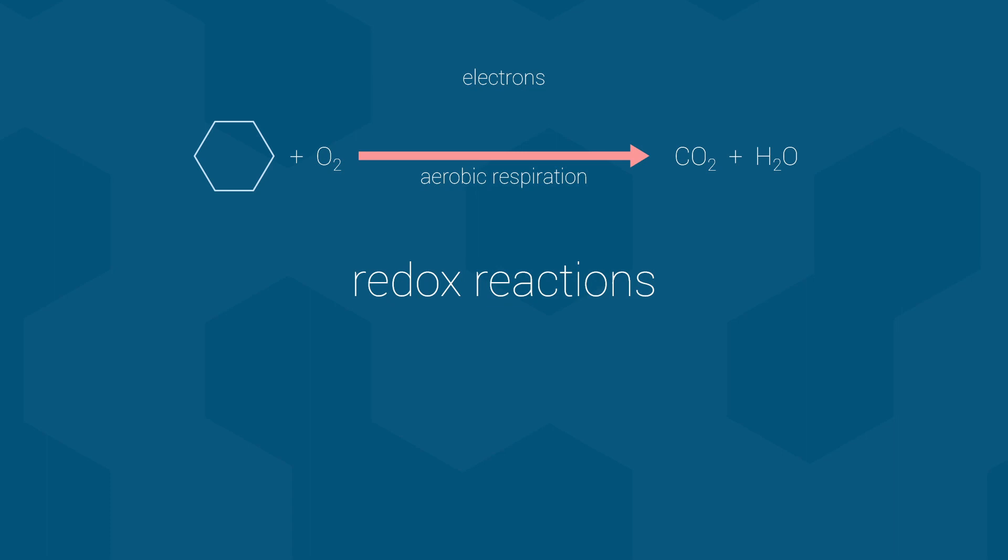The glucose molecule is broken down over many steps, and the electrons from glucose are transferred to the oxygen molecules to form water. In other words, the glucose is oxidized to form carbon dioxide, and the oxygen is reduced to form water.